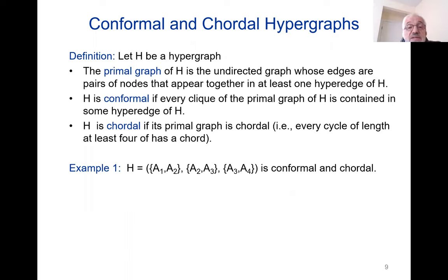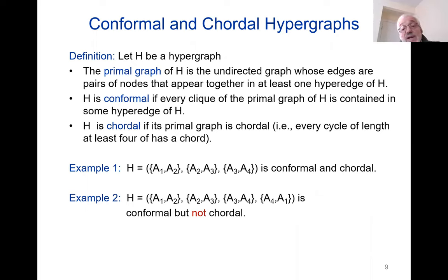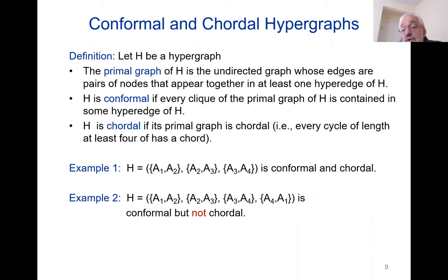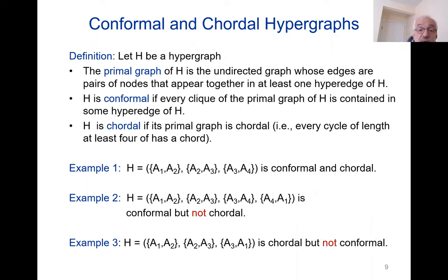Let's look at some examples. The first one we saw — the path of length three — is conformal and chordal. That's very easy to see. If I look at {a1,a2}, {a2,a3}, {a3,a4}, {a4,a1}, it is conformal — the only cliques are the edges themselves and each of them is a hyperedge — but it is not chordal: it's a cycle of length four missing a chord. On the other hand, if I look at the cycle of length three, this is chordal but not conformal. So I hope I've given some sense of what it means for a hypergraph to be both conformal and chordal.